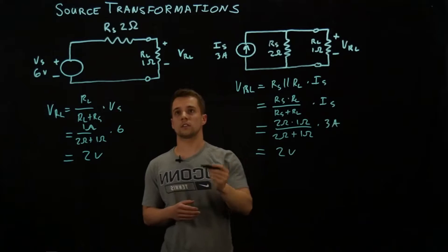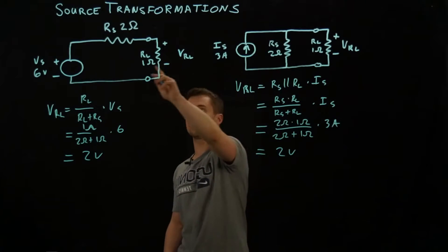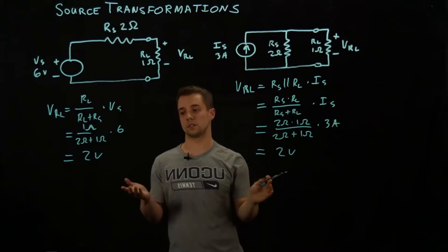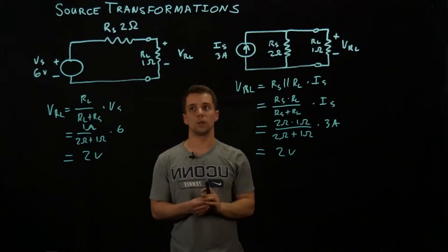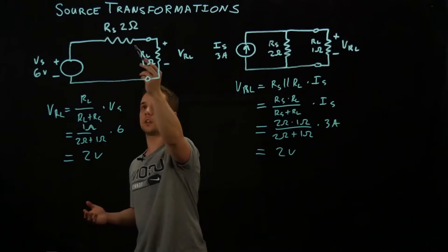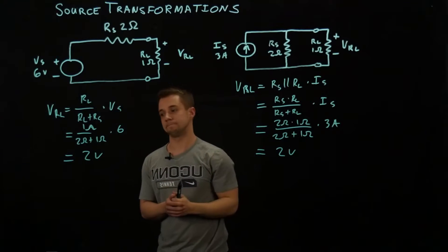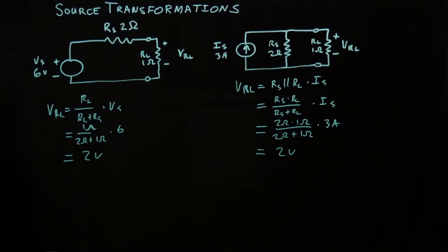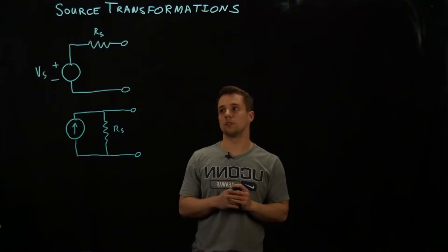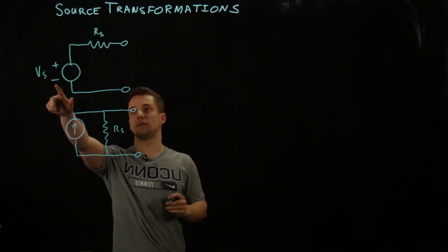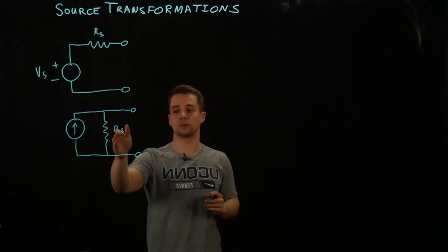So this suggests that in each case we can replace this circuit with this circuit and they would give the same result. So now I want to talk about how we can switch between a voltage source with a resistor in series and a current source with a resistor in parallel.